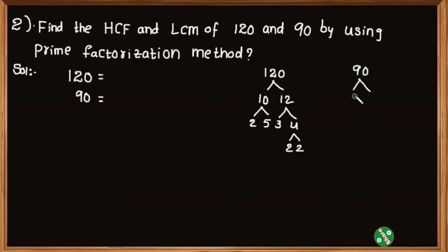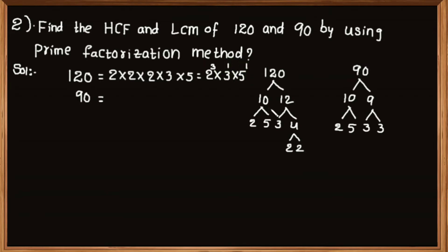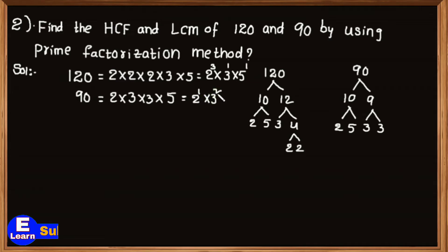Similarly, 90 can be written as 10 multiplied by 9. 10 can be written as 2 multiplied by 5, and 9 can be written as 3 multiplied by 3. So 120 can be written as 2 multiplied by 2 multiplied by 2 multiplied by 3 multiplied by 5, that is equal to 2 to the power 3 multiplied by 3 to the power 1 multiplied by 5 to the power 1. Similarly 90 can be written as 2 multiplied by 3 multiplied by 3 multiplied by 5, that is equal to 2 to the power 1 multiplied by 3 squared multiplied by 5 to the power 1.